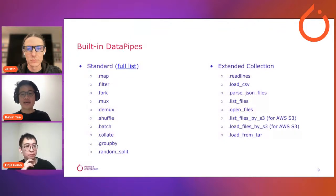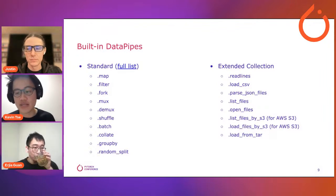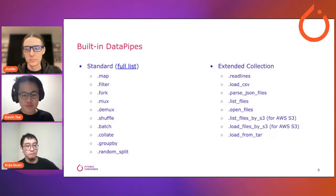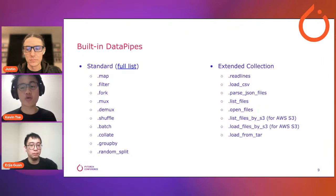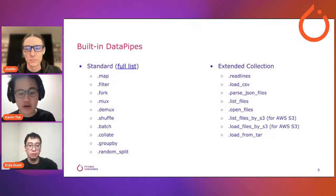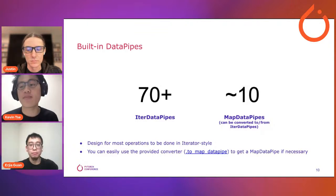Here are some examples of the built-in data pipes we provide. Some perform very common transformations: map, fork, filter, shuffle, batch, and random split. Other data pipes interact with specific file types or file systems — for example, you can load CSV files, parse JSON files, list and open files on the file system. We also have good integration with cloud storage providers such as AWS S3, Google Cloud, and Azure. We have data pipes to list and load files on any S3 bucket, and APIs to read from other vendors such as Hugging Face. Overall, we have about 70 built-in iter data pipes and map data pipes.